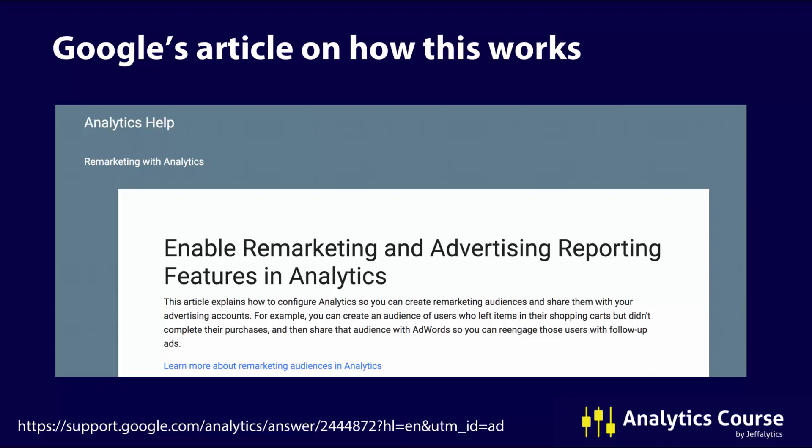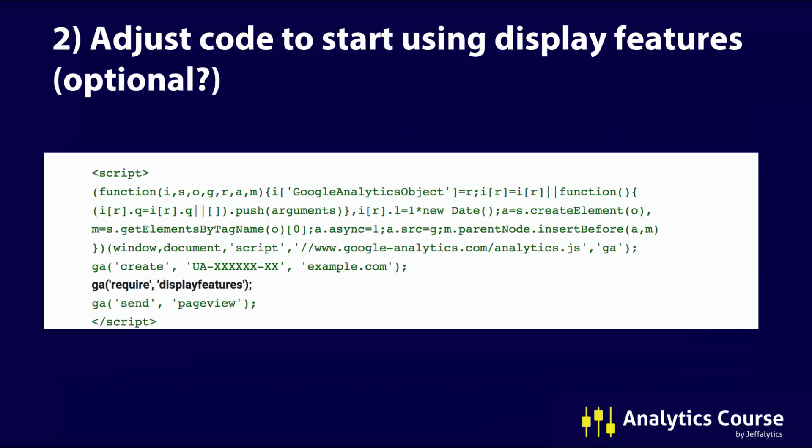If you click the Learn More button, Google tells you how it works — I'm linking to this in our YouTube notes and on the accompanying blog post. They say that to enable remarketing, advertising reporting, and demographics, you just click that button and you're good to go. That's what most people do because that's what Google's documentation says. Yet from my experience, it doesn't work just by clicking that button. It doesn't work at all.